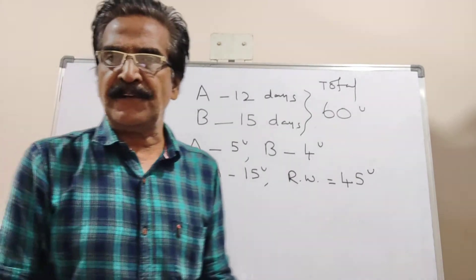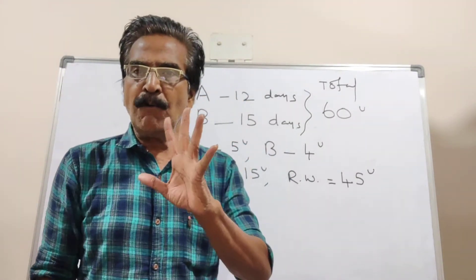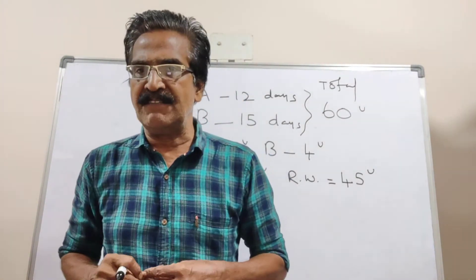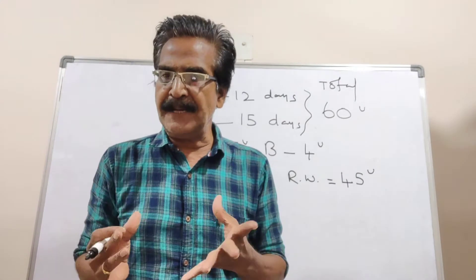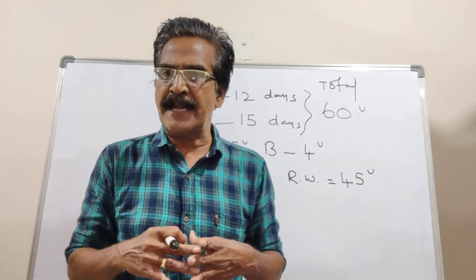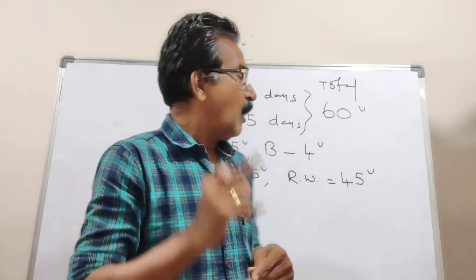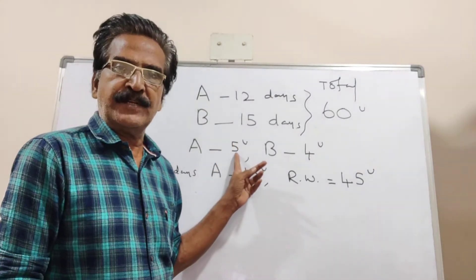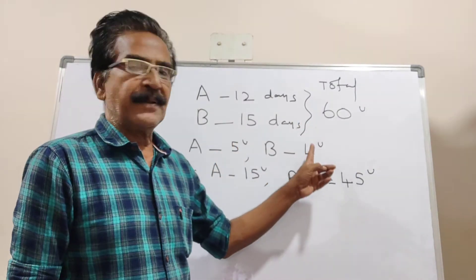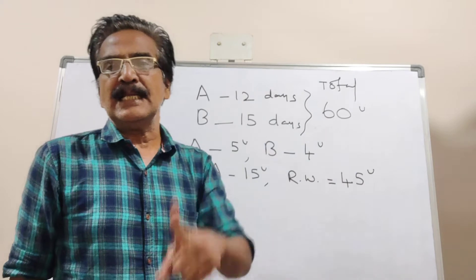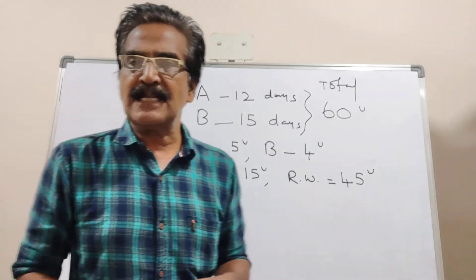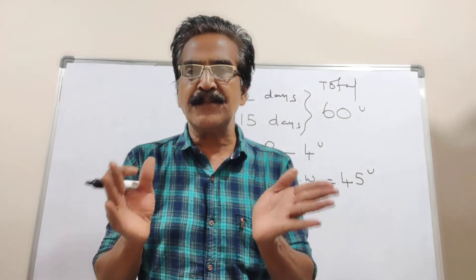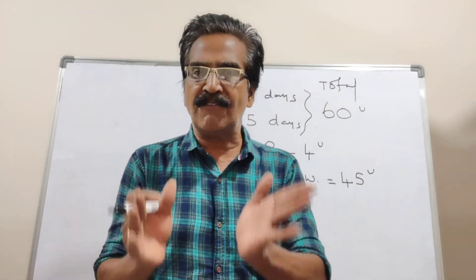45 units of work is remaining — that is 60 minus 15. Now B also joins A. If A and B work together, A contributes 5 units and B contributes 4 units, so A plus B can do 9 units of work per day.